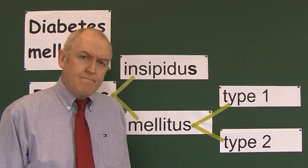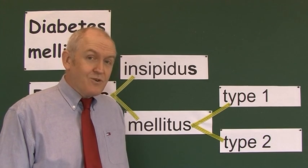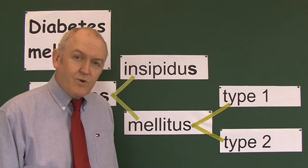So to recap: diabetes means watery or 'to go through,' mellitus means sweet, and there are two types of diabetes mellitus — type 1 and type 2, which is quite easy to remember.